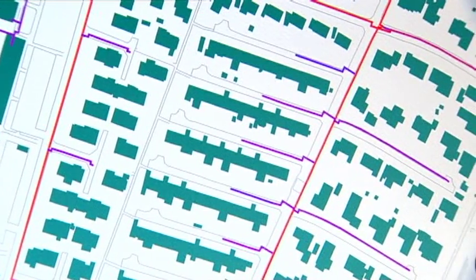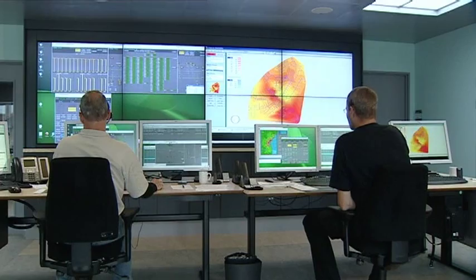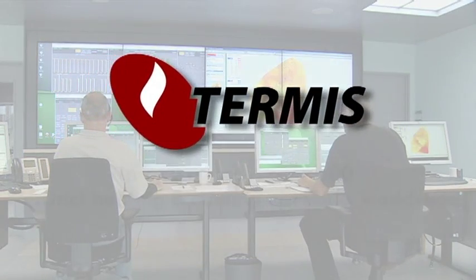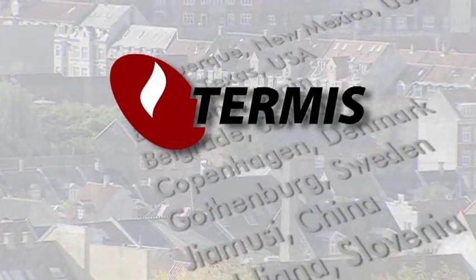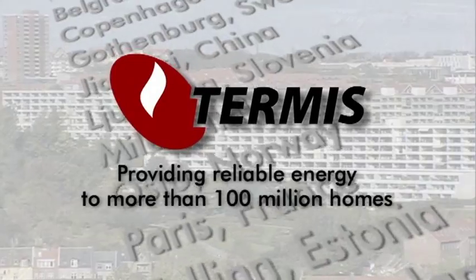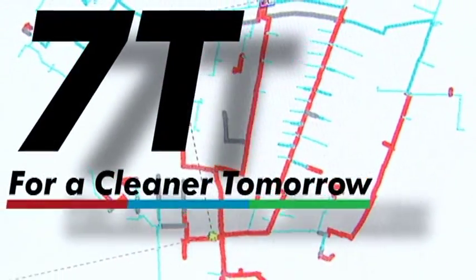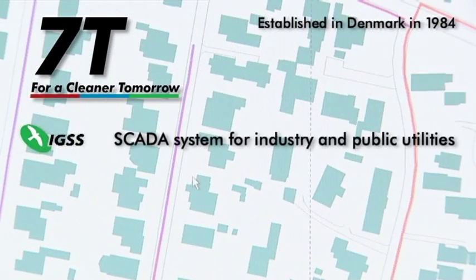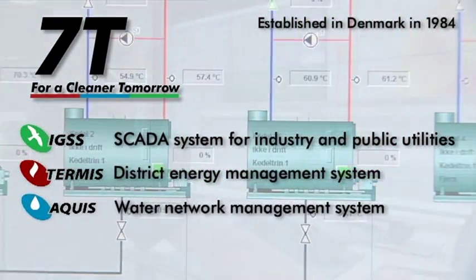TERMIS is an established and proven solution. Released first in 1987 as a design and modelling tool, TERMIS has been developed in close cooperation with leading district energy utilities in Denmark and is now in operation in over 500 district heating and cooling networks worldwide. Today, TERMIS provides reliable energy to more than 100 million homes. TERMIS is produced by Seven Technologies, a leading Danish energy system software house with over 25 years of experience, also offering SCADA solutions and control and monitoring applications to a wide range of public utility sector applications.